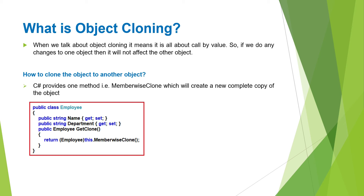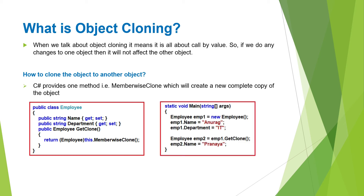The memberwise clone method will create a new complete copy of the employee object. From the main method — the client code — first we create a new instance of the employee object assigning the name and department properties with some values. Next, we create the second object by calling the getClone method using the first object instance, which in turn returns a new complete copy of the employee1 object. Now both employee1 and employee2 are independent, and if you do any changes to either object, it will not affect the other.